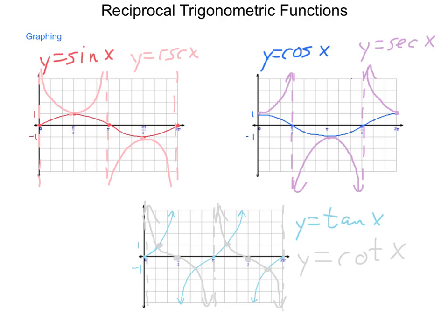So we can start with our basic three—sine, cosine, and tangent—and from those, either numerically or graphically, build out our reciprocal trig functions: cosecant, secant, and cotangent.